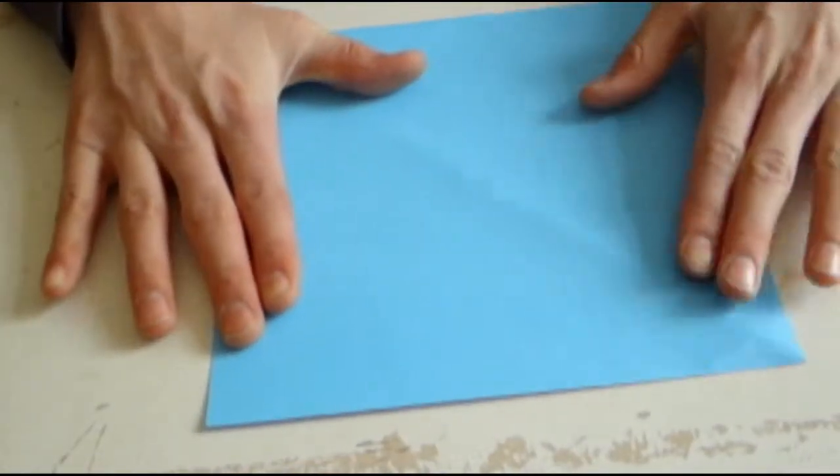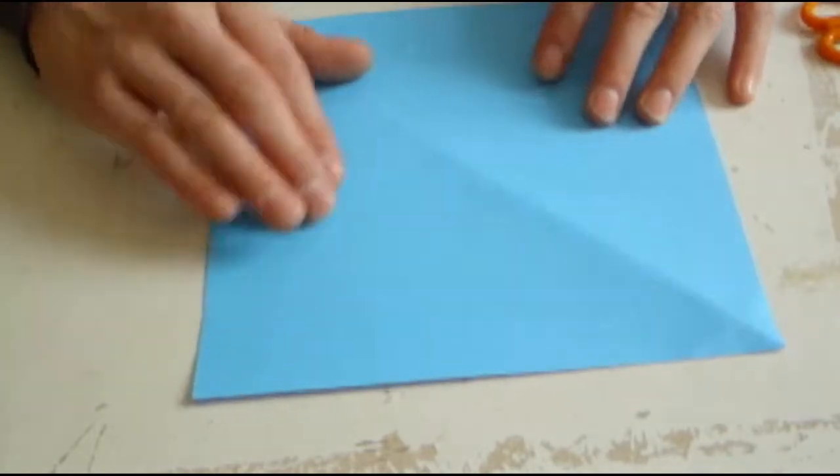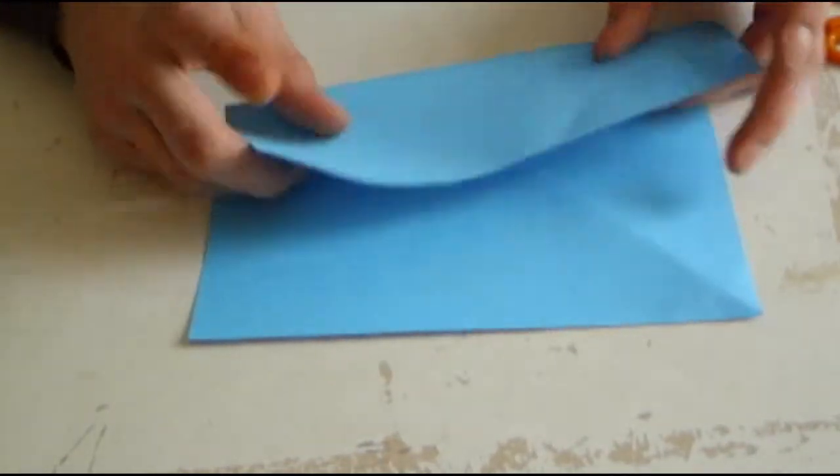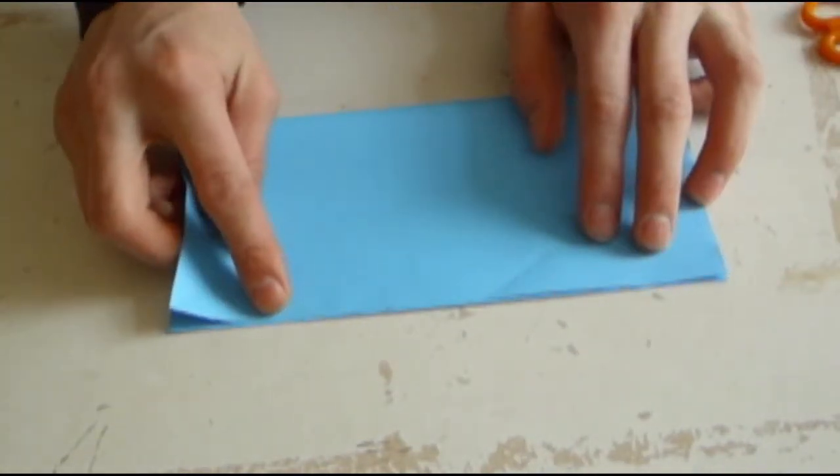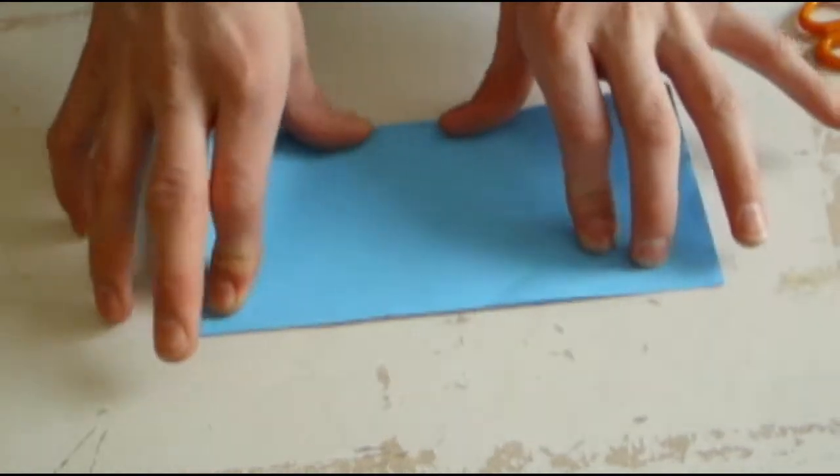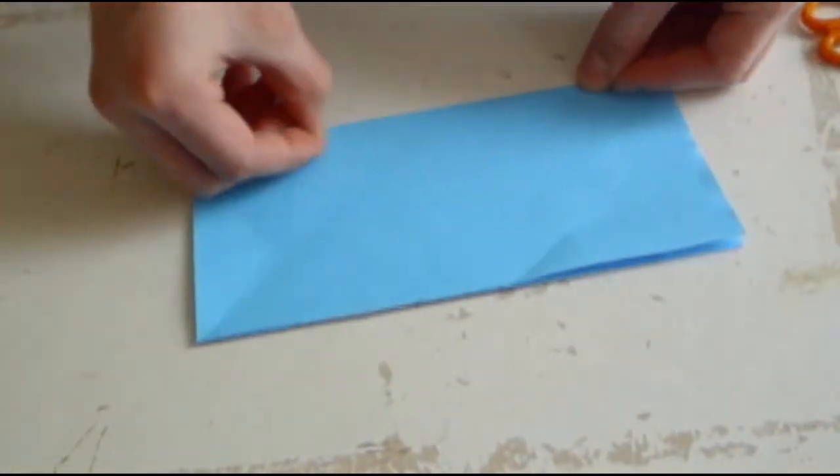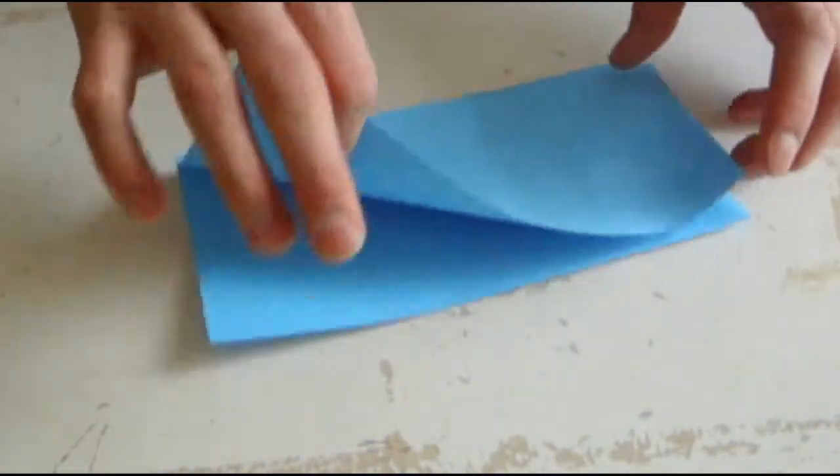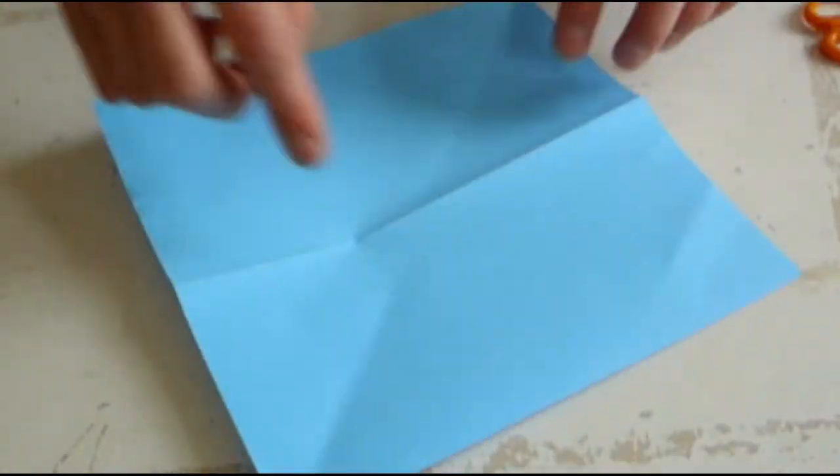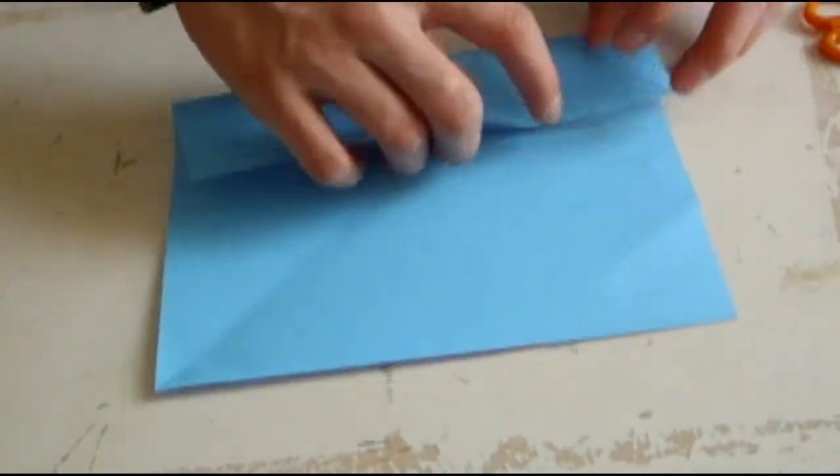Now take a square piece of paper, a simple square. Fold it in half.